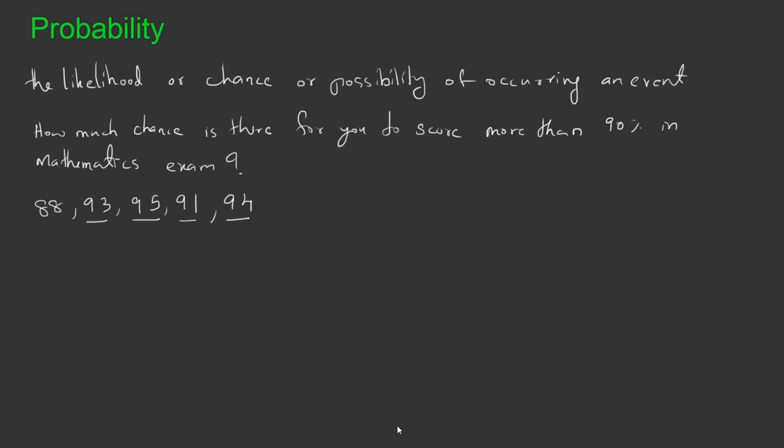Now, how much chance exactly? For this, we need to express this in numerical values. Out of 5 exams, you scored above 90 percent in 4 exams. So I can write it as 4/5. This is the numerical value of probability here.